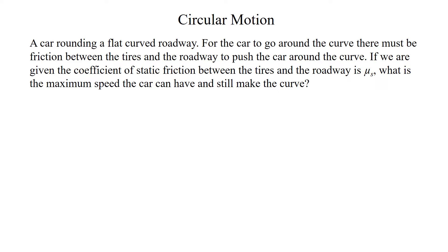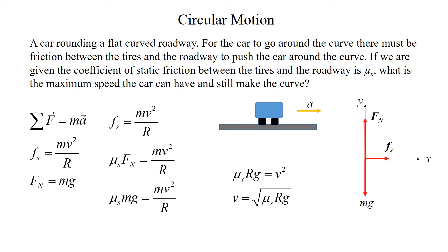Let's make a quick drawing and free body diagram to look at the forces involved. Here I have a crude sketch of a car on a roadway with the acceleration vector drawn in yellow, pointing toward the center of the curve. In the free body diagram, we have the weight of the car downward mg, the normal force from the roadway F_n holding the car up, and the static friction between the tires and the roadway F_s pointing toward the center of the curve.